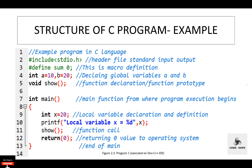Let's see an example of the basic structure of a C program. First, the documentation section — this is optional. In a C program, single line comments are written using two forward slashes, for example: // Example program in C language. This is a single line comment. We can also create multi-line comments using slash-star, followed by the comment lines, then star-slash.